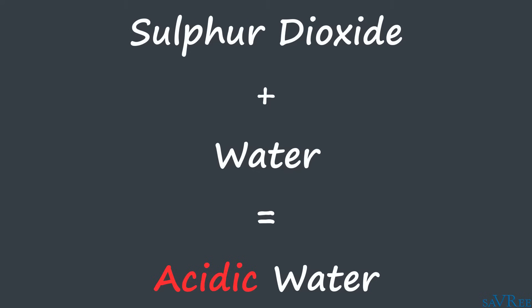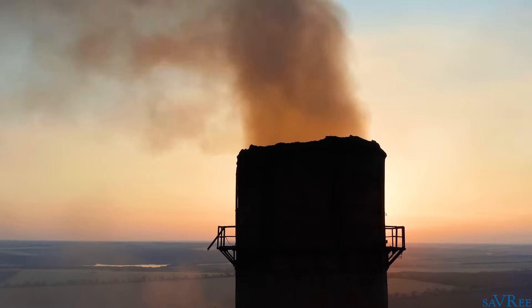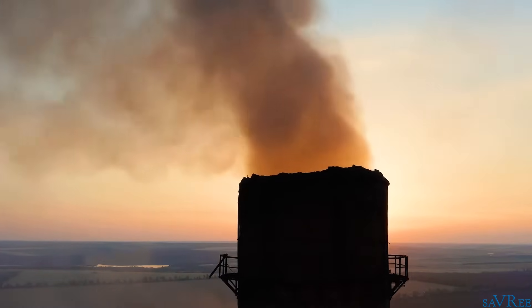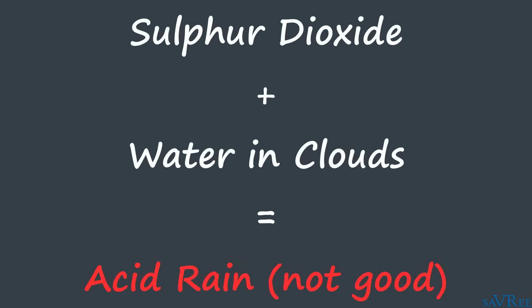So if we're burning fossil fuels in a power station, for example, or in an industrial plant, and we just allow this sulfur dioxide to be vented to atmosphere, then it may mix with the water in the clouds and form acid rain. Acid rain has a detrimental effect on the environment, and therefore, if possible, we don't want to allow this sulfur dioxide to get into the moisture in the clouds and form acid rain. In order to prevent this occurring, we're going to have a process known as flue gas desulphurization.